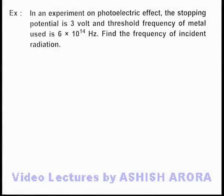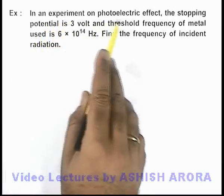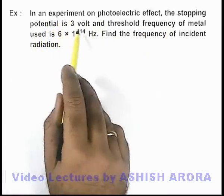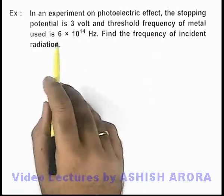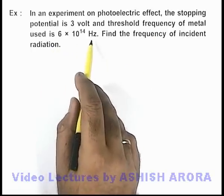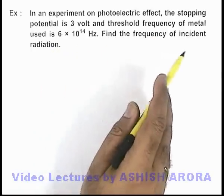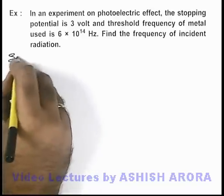In this example, we are given that in an experiment on photoelectric effect, the stopping potential is 3 volts and the threshold frequency of metal used is 6 into 10 to the power 14 hertz. Here we are required to find the frequency of incident radiation.